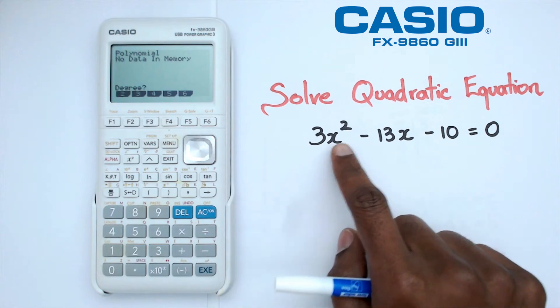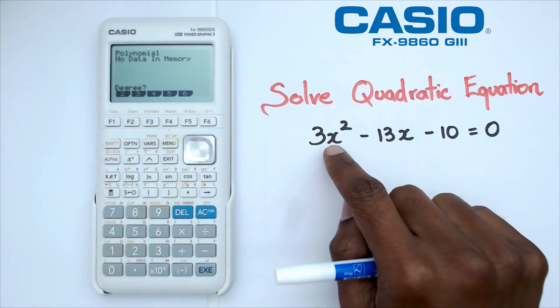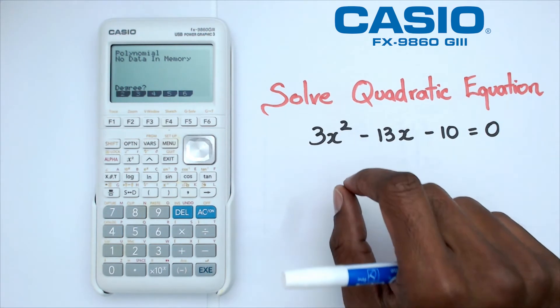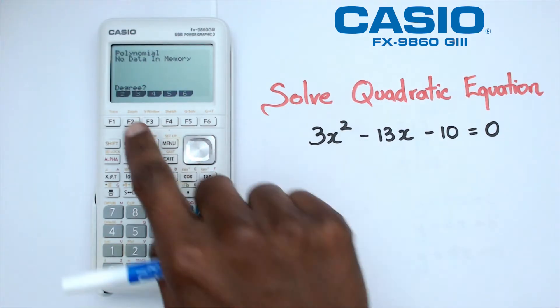Now in this particular case we are looking at a quadratic. We've actually got x squared as the highest degree for this polynomial, so that's the 2.